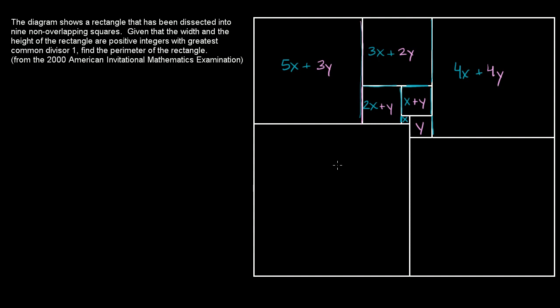And then we can express this square's dimensions in terms of x and y. This is going to be 5x plus 3y, then you're going to have 2x plus y, and then you're going to have x. So you add the x's together, 5x plus 2x is 7x, plus x is 8x, and then you add the y's together, 3y plus y, so that's going to be plus 4y.